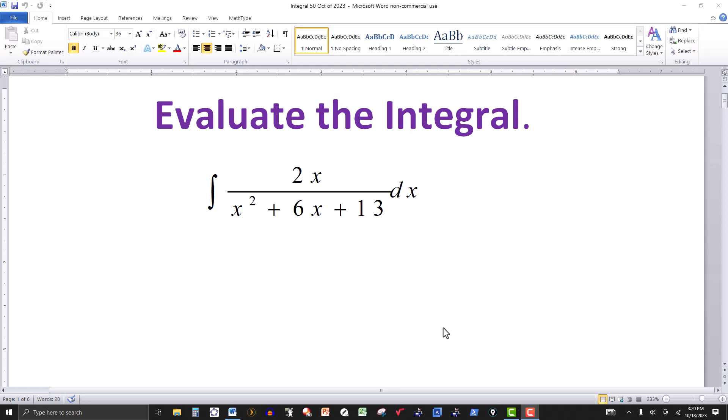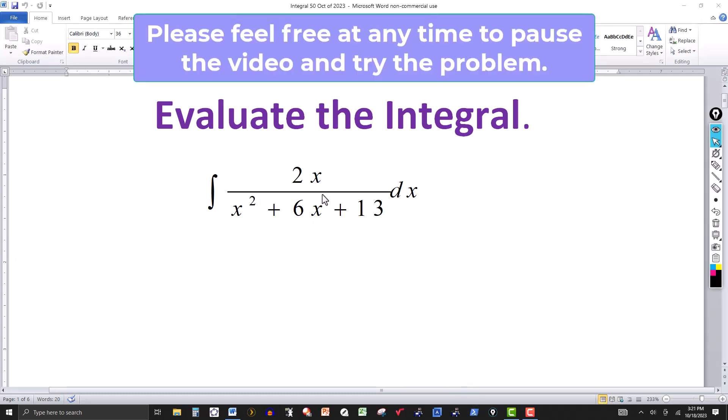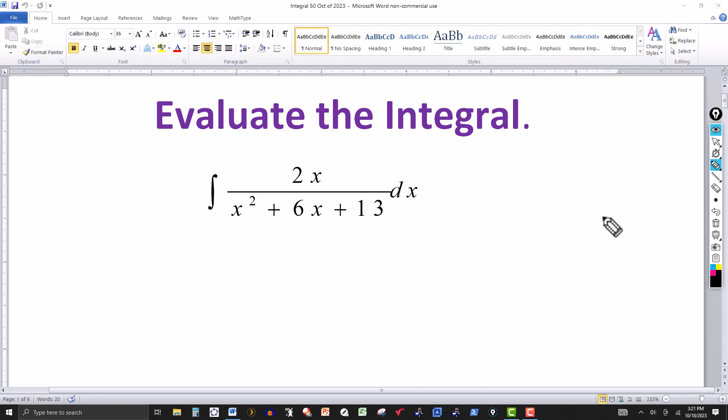In this video, we're going to evaluate the integral of 2x over x squared plus 6x plus 13. Now the integrand is a rational expression, but the denominator doesn't factor. So that eliminates partial fractions.